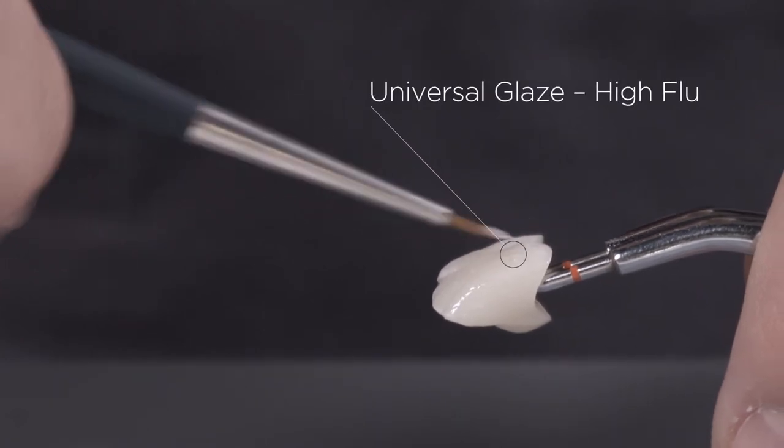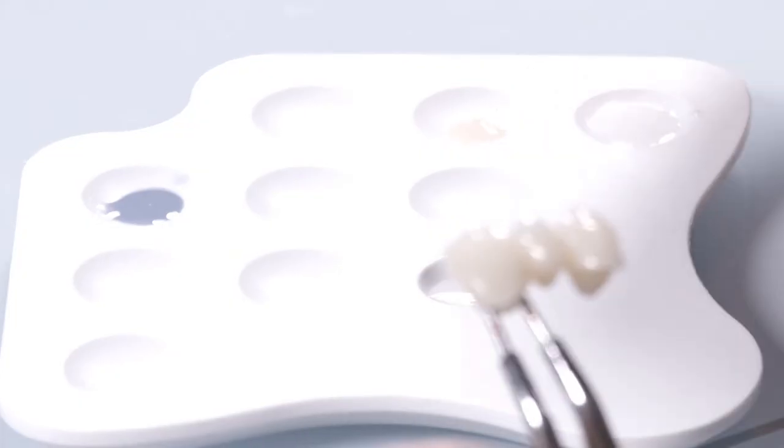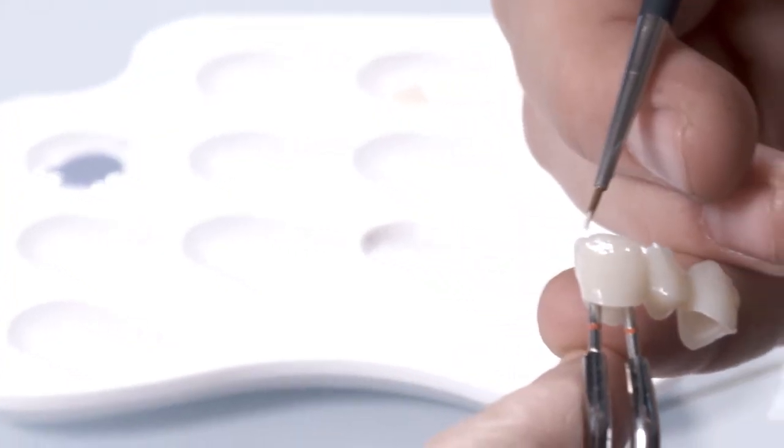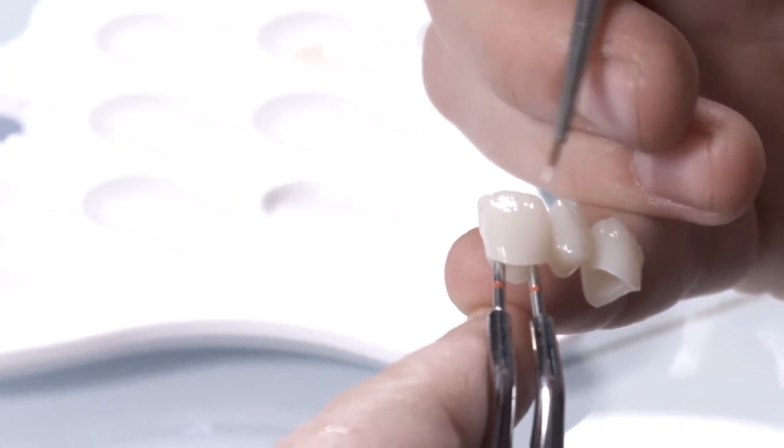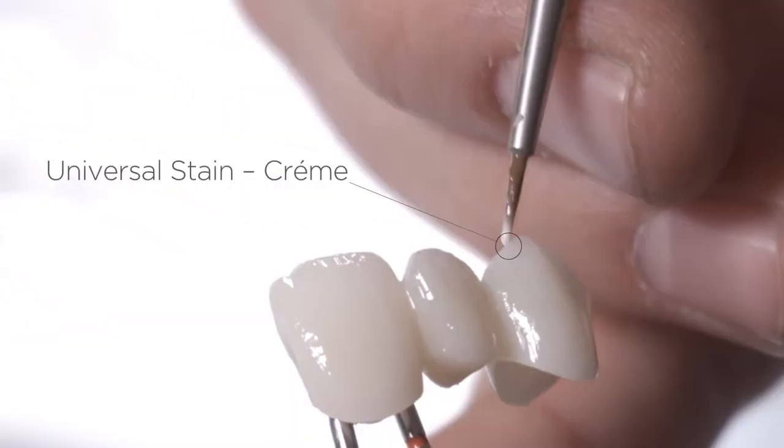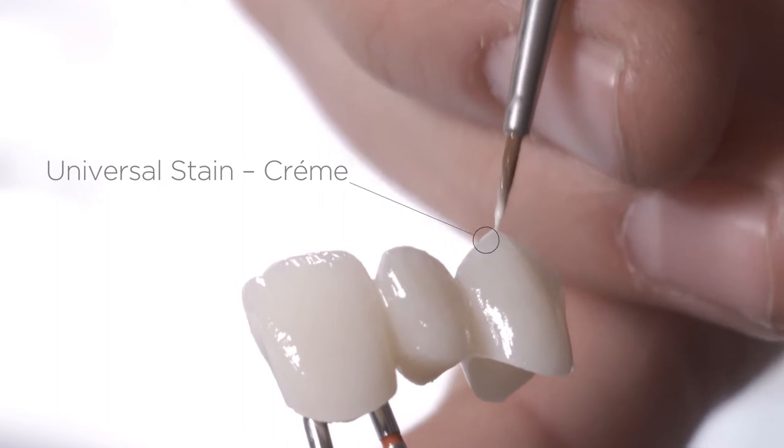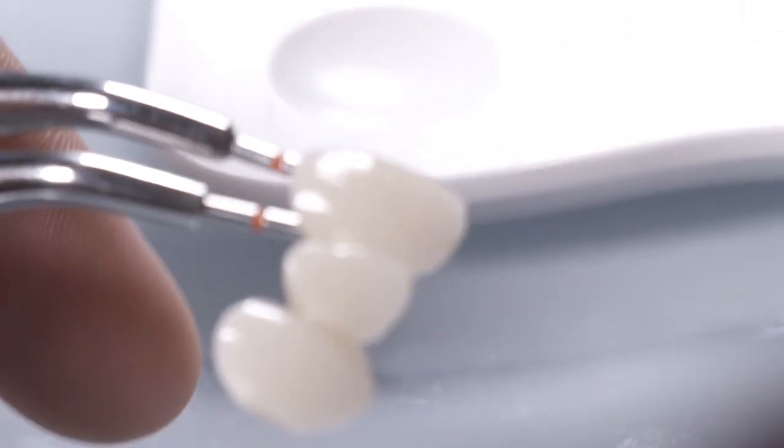With this method, finalization with glaze and stain is achieved in a single step. Paint a fine hem on the incisal edges with cream. Then complete the posterior incisal edge with Incisal Stain E1.